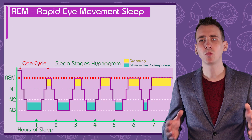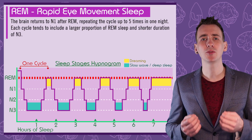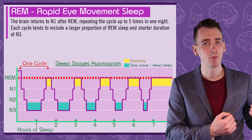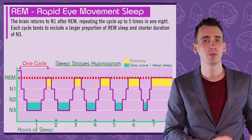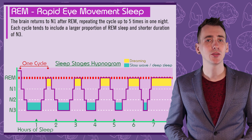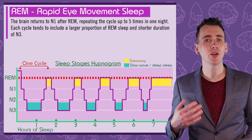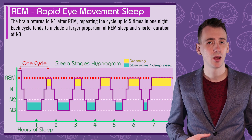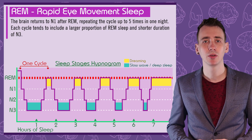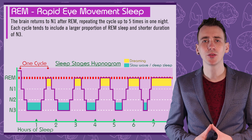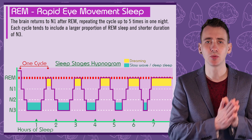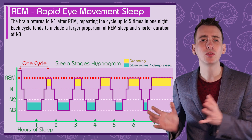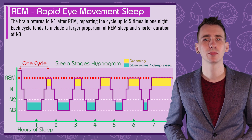That's one cycle of sleep. Your brain will now transition back to N1 and repeat the cycle. Each cycle tends to include a larger proportion of REM sleep compared to NREM sleep. Over the course of one night, humans will usually have between 4 and 5 full cycles.